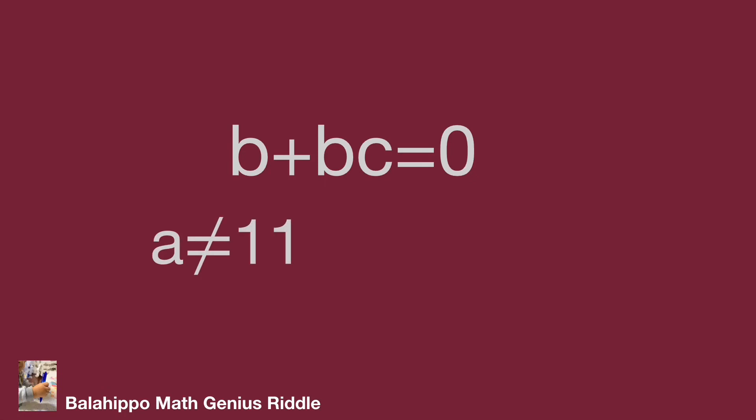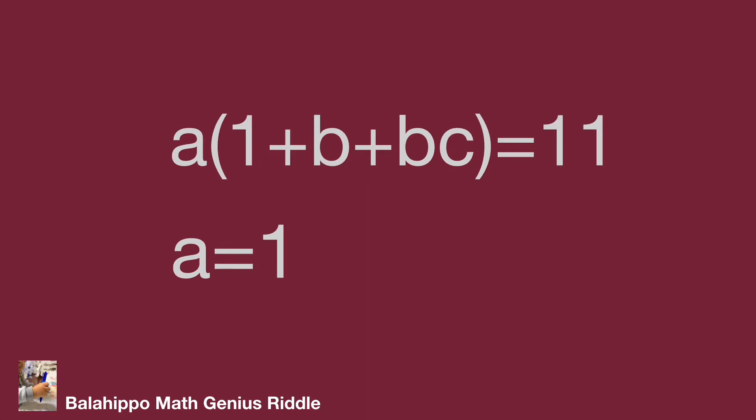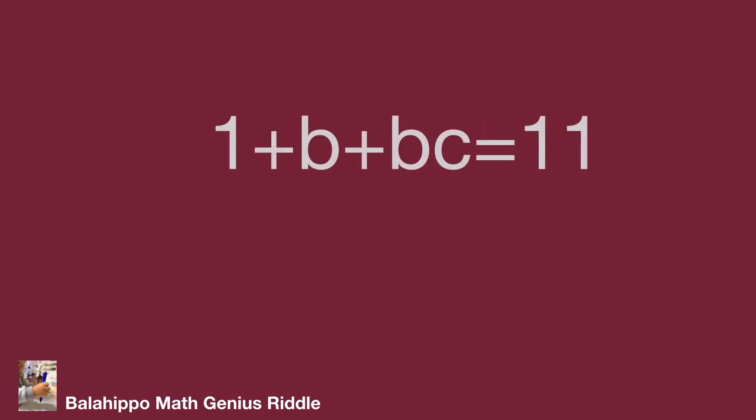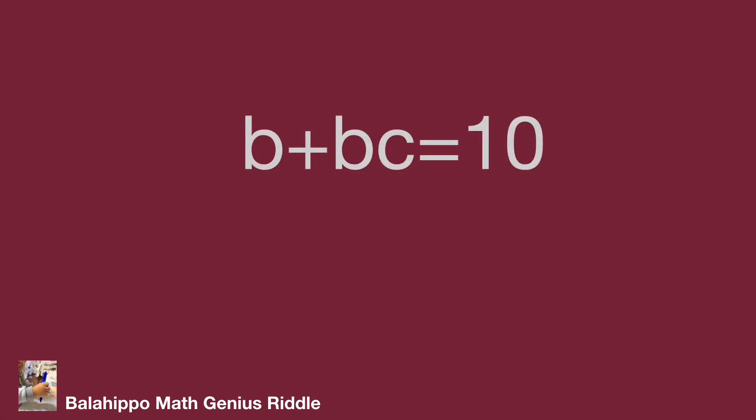Next, apply the other condition: a equals 1. Substitute a by 1 to the equation as 1 times bracket 1 plus b plus bc bracket equals 11. This develops to 1 plus b plus bc equals 11, then b plus bc equals 10.